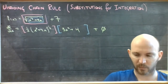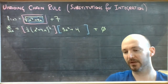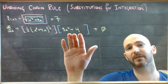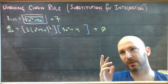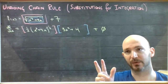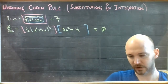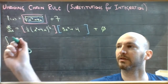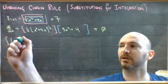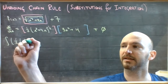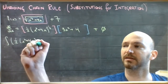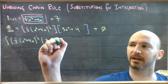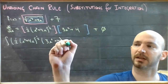So what I've got here is the derivative of the outside, and then the derivative of the inside. So if I'm going to try and undo this, that would look like the integral of one half times x cubed plus 4x to the negative one half, times 3x squared plus 4, dx.